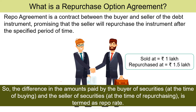The difference in the amounts paid by the buyer of securities at the time of buying and the seller of securities at the time of repurchasing is termed as Repo Rate. It helps the seller of securities to raise short-term funds. To influence short-term interest levels in the economy, generally RBI — that is, the central bank — conducts repo transactions. The tool is used to manage excess liquidity in the monetary system. Repo or Reverse Repo transactions take place between parties approved by RBI and in securities approved by RBI.